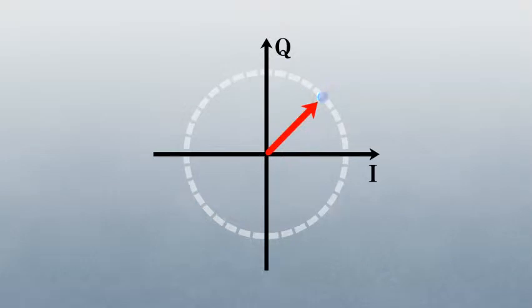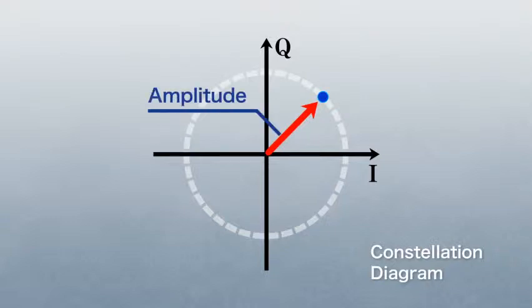A constellation diagram is commonly used to visualize phases of the optical signal. It represents the amplitude of the optical signal by magnitude of vector and its phase by the angle from the x-axis.